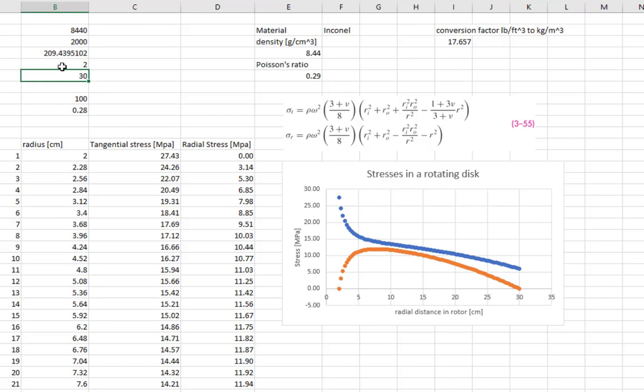In fact, as r goes to zero, you encounter a singularity. So if you want to include the possibility of a solid circular disc that is spinning, you have to modify these equations by letting the inner radius go to zero and eliminate the first and third terms in both of these equations. Then you can plot it for a solid disc that has no opening.